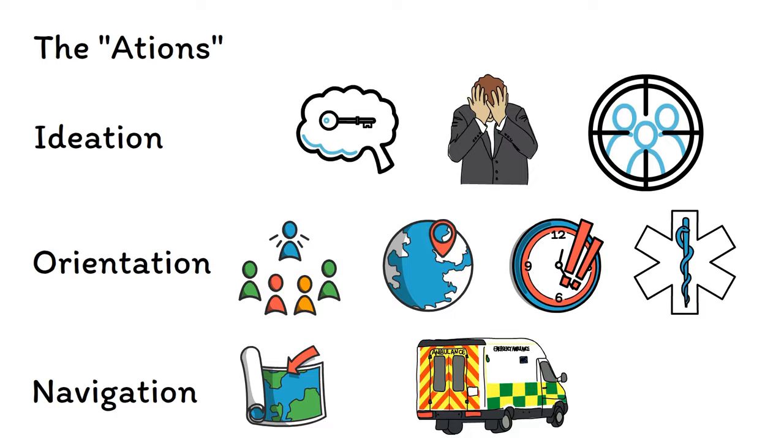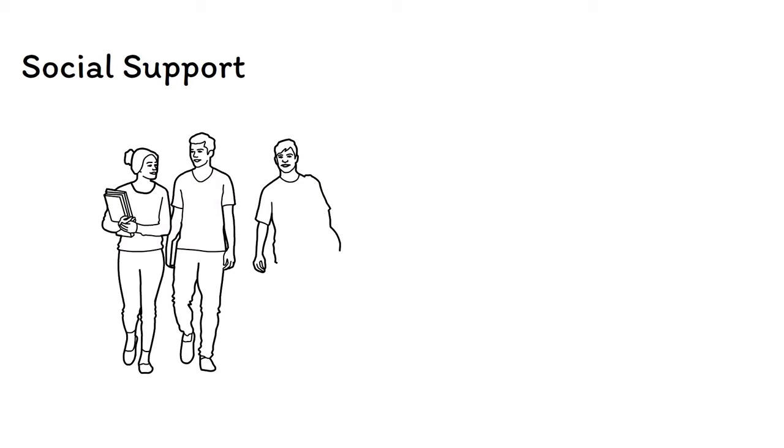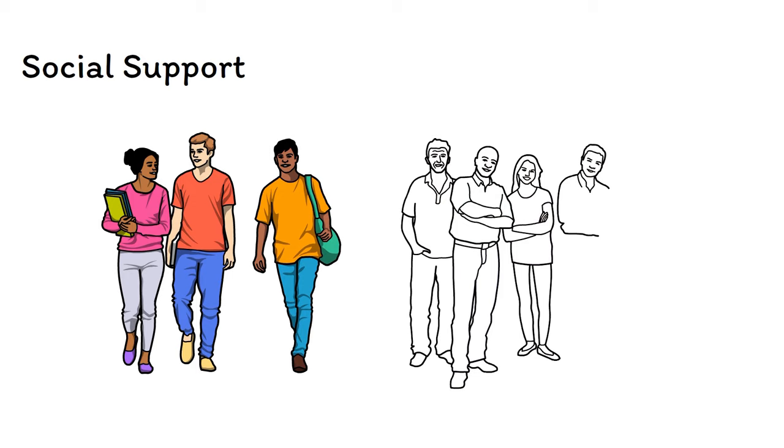Friends and family play a key role in mental health, so knowing your patient's social support can often directly impact management. For example, you should be much more hesitant to discharge a suicidal patient who is socially isolated and lives alone compared to someone who will return home to a supportive family who will volunteer to keep a close eye on them over the next few days.